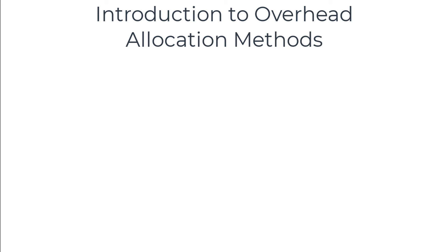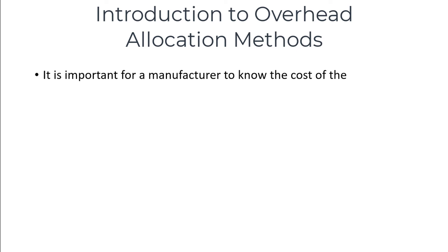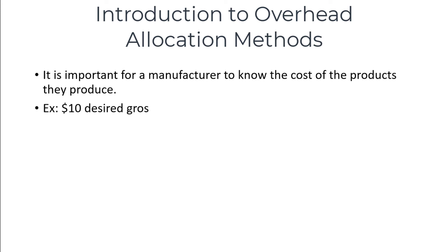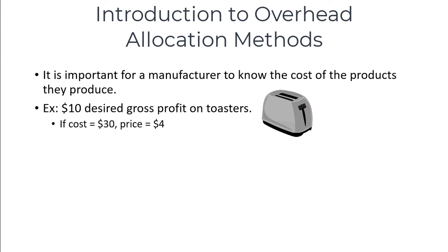For a variety of reasons, it's important for a manufacturer to know the cost of the products that they produce. One of the primary reasons accurate costing is needed is in order to set prices. For example, if I want to make $10 in gross profit per toaster that I sell, then that's easy if I know that the toaster costs me $30 to produce — I should charge $40.